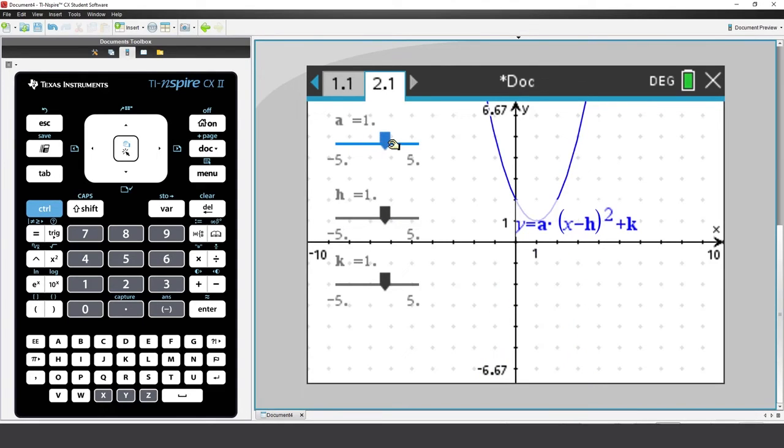To release the grip, press escape. Now select slider h. Grip the slider marker and explore. The graph is translated parallel to the x-axis.